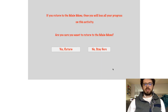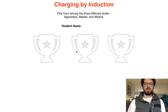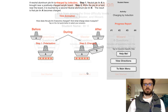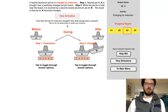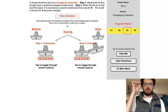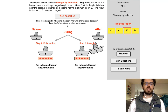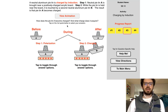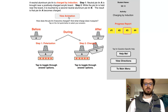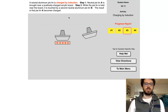Let's move on to the master level. A neutral aluminum Python is charged by induction. Step one: the neutral Python A is brought near a positively charged acrylic board. Step two: while the Python is held near the board, it is touched by a second neutral aluminum Python B. The result is that Python A becomes charged.